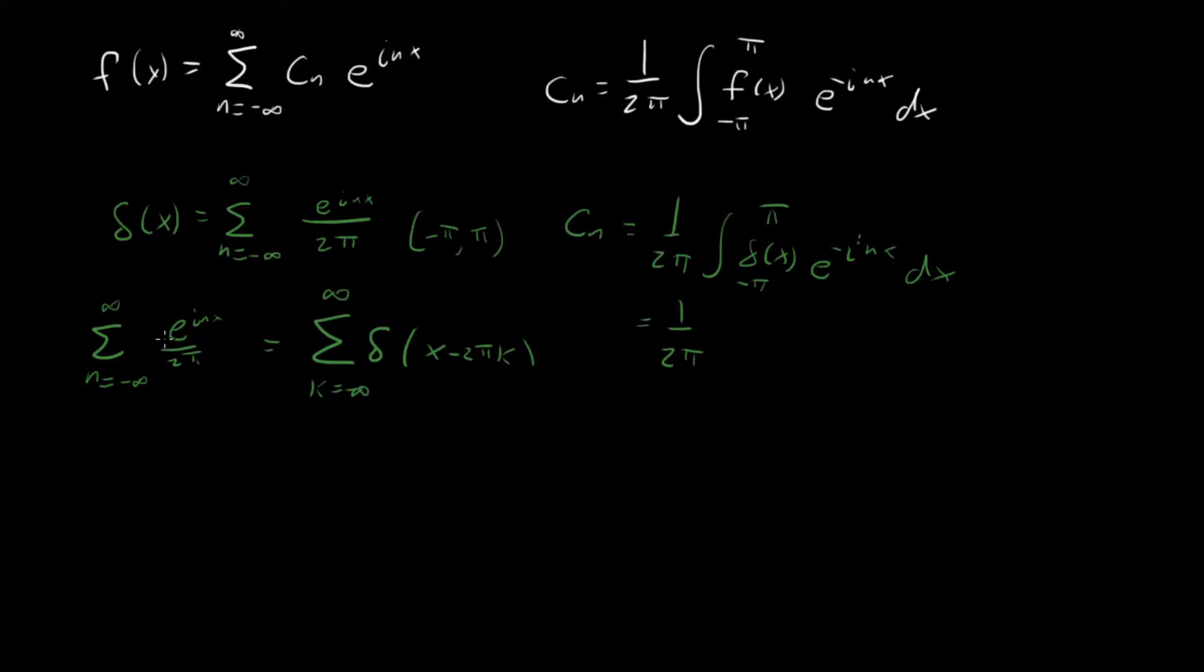With our delta function, every n is valued equally. And that may be kind of surprising at first, because it doesn't look like this is really converging all that well.